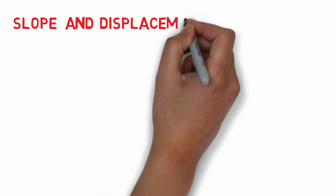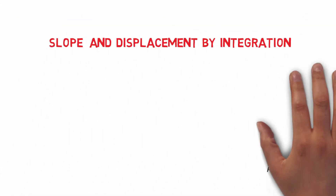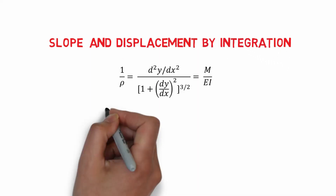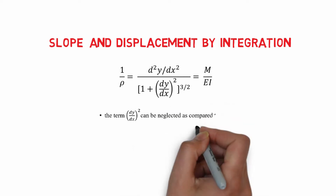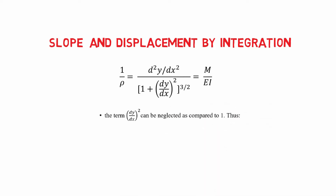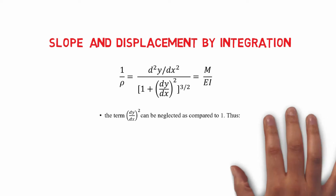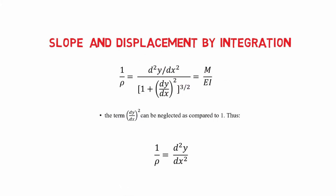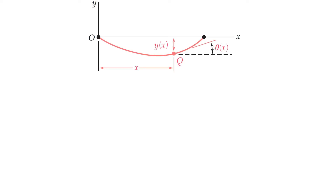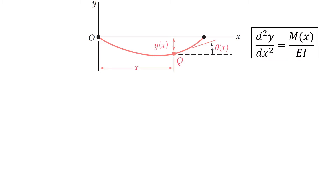The equation of the elastic curvature can also be expressed mathematically. Assuming small beam deflections and small slopes, the term (dy/dx)² can be neglected compared to 1. Thus, we can rewrite the equation of the elastic curvature as: 1 over rho equals d²y over dx². The differential equation describing the deflected shape of a beam under bending moment M(x) is as follows.